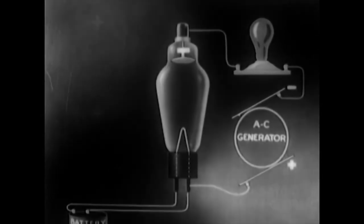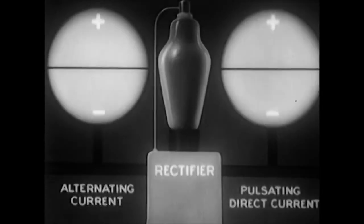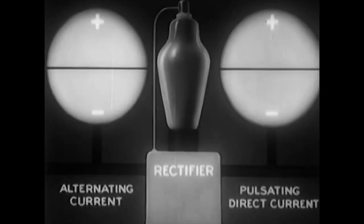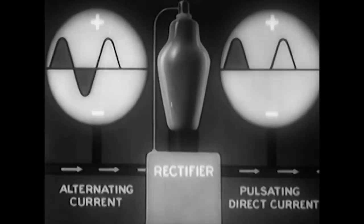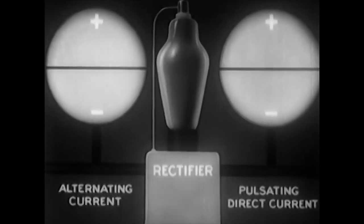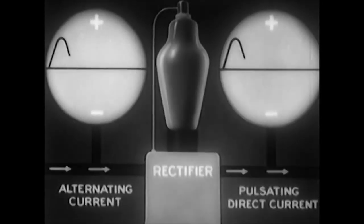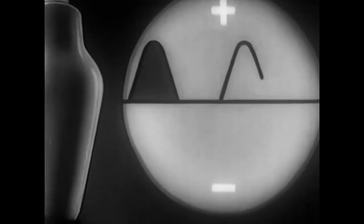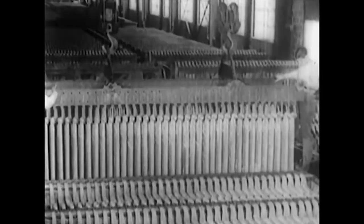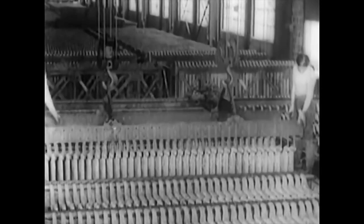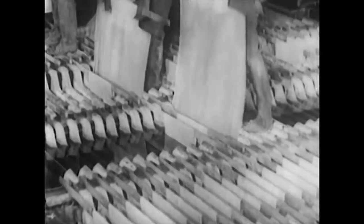We can visualize the result of the tube's rectifying action with the aid of two oscilloscopes. The one on the left shows alternating current coming in; the one on the right shows pulsating direct current going out. The applications of this basic rectifying principle are many and important — changing AC to DC on the nation's electrified transportation systems, and rectification for electroplating operations possible only with direct current.